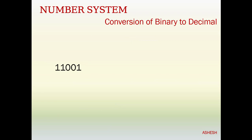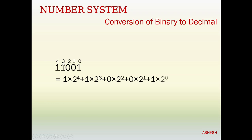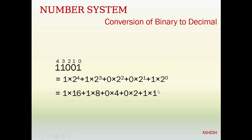Please pause the video and try yourself. Now let's see: positions are 0, 1, 2, 3, 4. So: 1 into 2 to the power 4, plus 1 into 2 to the power 3, plus 0 into 2 to the power 2, plus 0 into 2 to the power 1, plus 1 into 2 to the power 0. That gives: 1 into 16 equals 16, 1 into 8 equals 8, 0 into 4 equals 0, 0 into 2 equals 0, 1 into 1 equals 1. Our answer is 25.